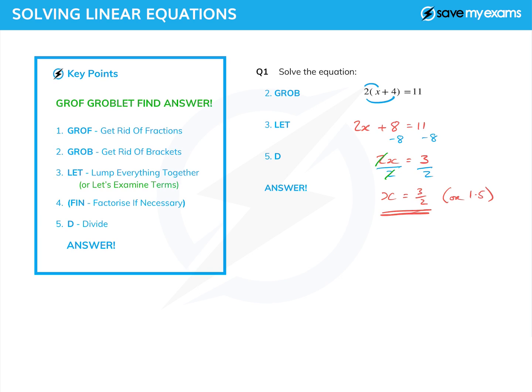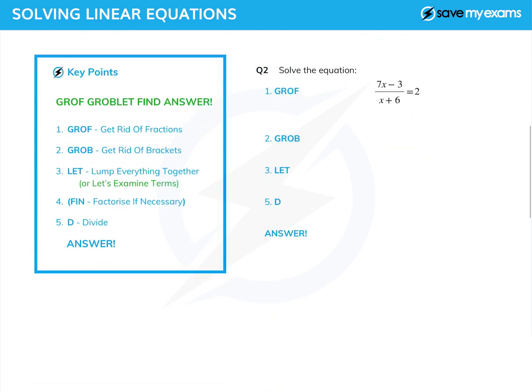Let's have a look at a slightly more complicated one where I've got two lots of x and this nasty algebraic fraction. Well don't worry about it because GROFF GROBLET will do what we need to do. Get rid of fractions, always multiplying by the bottom. Well the bottom of the fraction is x plus 6, so let's multiply by it. Of course we have to multiply on both sides otherwise it's not fair.